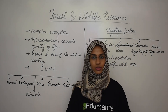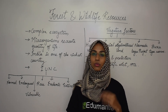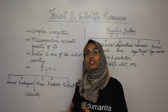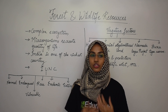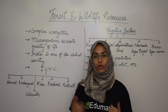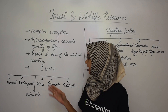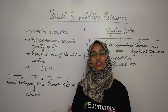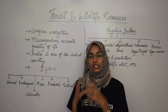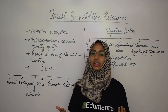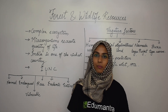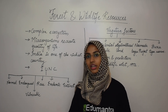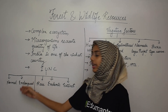The next one is a vulnerable species — these can become endangered if their preservation is not done. Examples include crocodiles, tigers, and one-horned rhinos. The next one is the rare species — those whose population is very less. It is necessary to preserve them so that they do not become vulnerable or endangered.